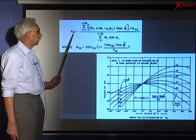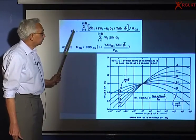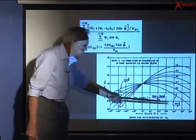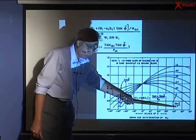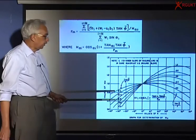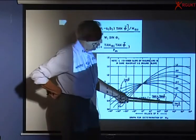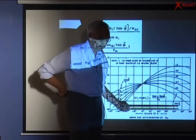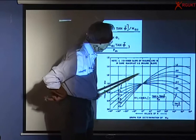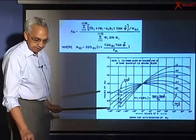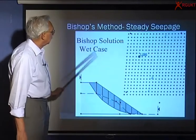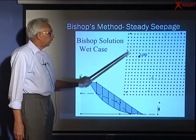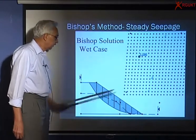Use that factor of safety again and get iteratively, because you remember here, tan phi by F. So if the friction angle is 25 and I'm assuming a factor of safety of 1.5, I have to do tan 25 by 1.5, enter into this graph and get the values. So it's an iterative process, I have to do the whole analysis by choosing different centers and different arcs.